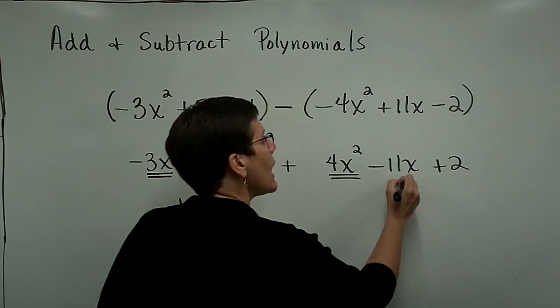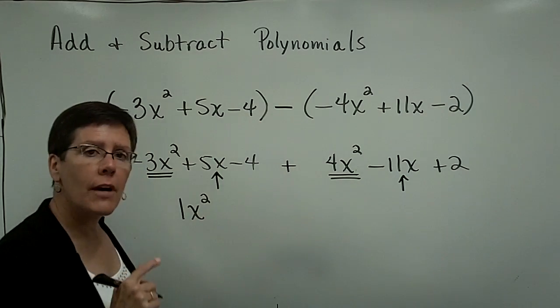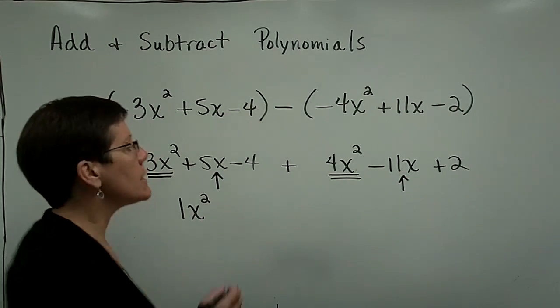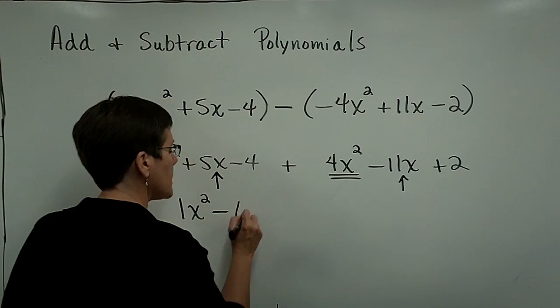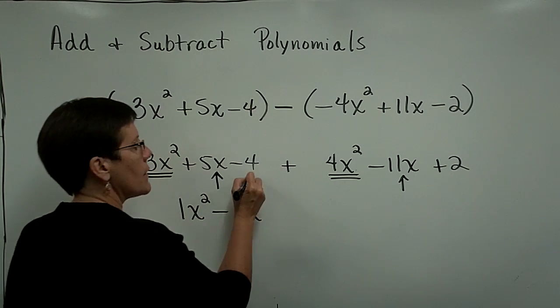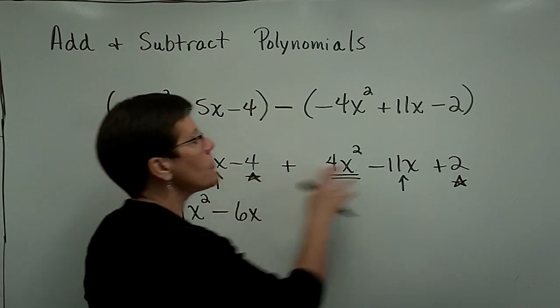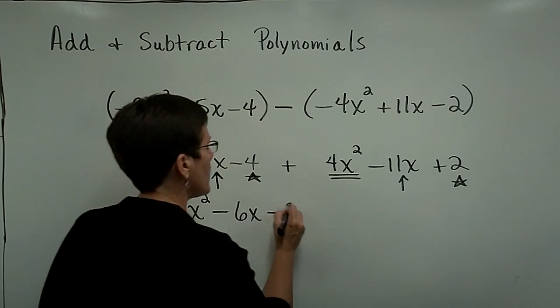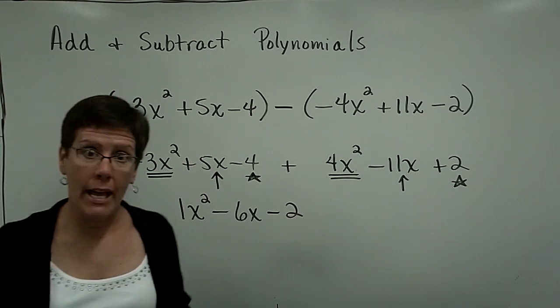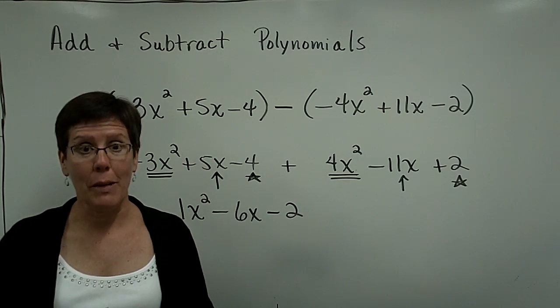5x positive, negative 11x. 5 minus 11 is a negative 6. I'll write that as a minus 6x. And then this minus 4 and positive 2 are like terms. A negative 4 plus 2 is a negative 2. And I have subtracted these two polynomials.